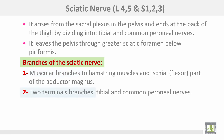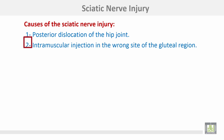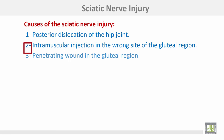The two terminals of the sciatic nerve are the tibial and the common peroneal, with articular branches to the hip joint. Sciatic nerve injury is caused by posterior dislocation of the hip joint, intramuscular injection in the wrong site of the gluteal region, or a penetrating wound in the gluteal region.